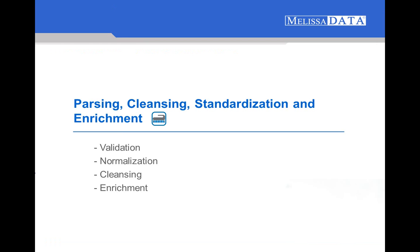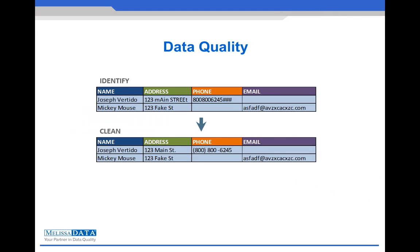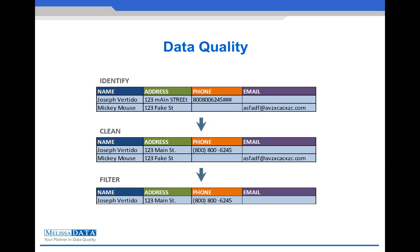Now that we have a better understanding of our data, we can move on to cleansing, parsing, standardization, and enrichment. A big part of data quality is, of course, cleaning the data, and this usually involves three things. First, we want to know which entries are invalid, whether because they are not well formed or do not pass our requirements. Next, we want to intelligently correct these invalid entries. And finally, if any data is uncorrectable — maybe because the record was completely garbage to begin with — we want to filter those records out of our database.